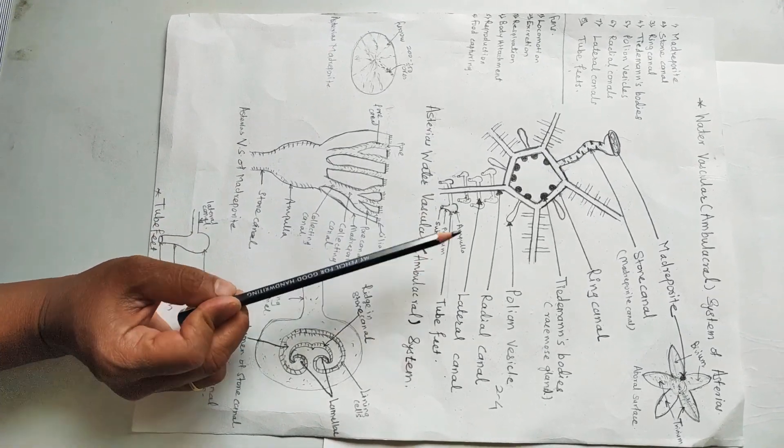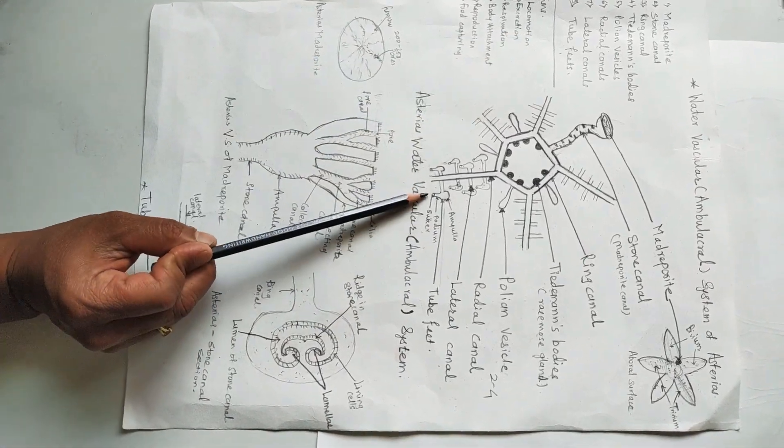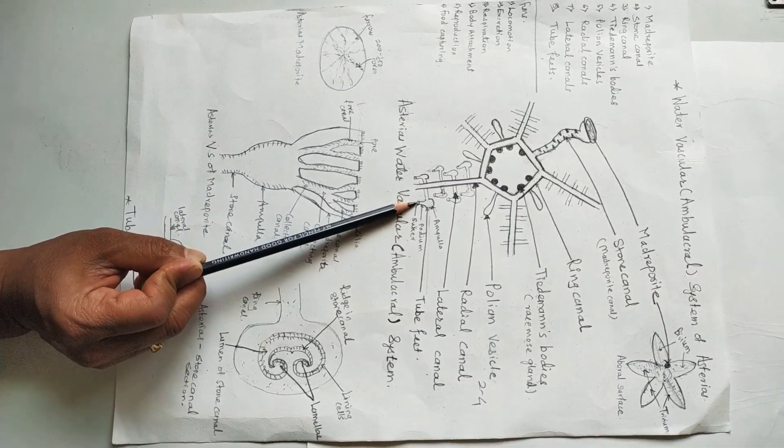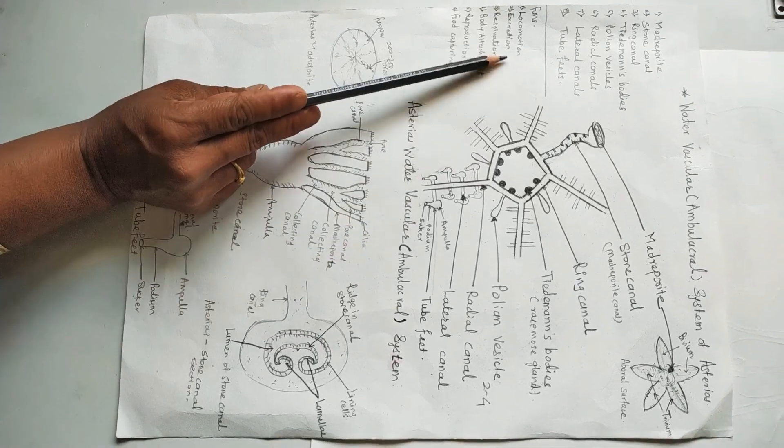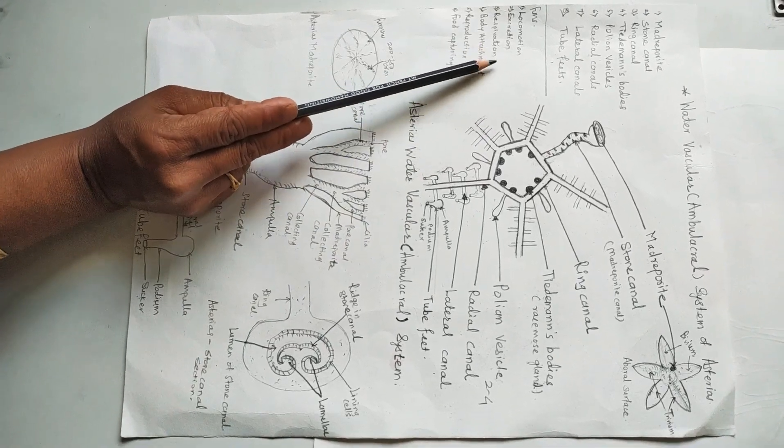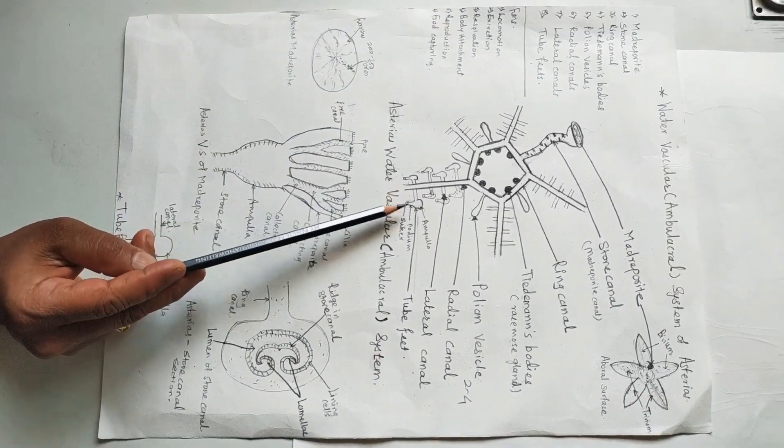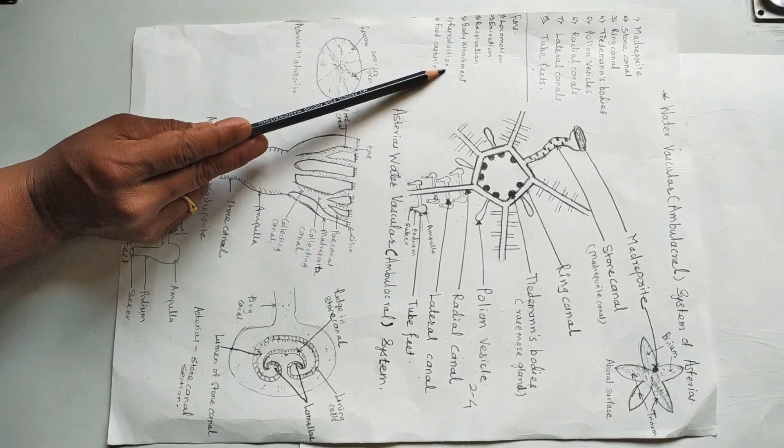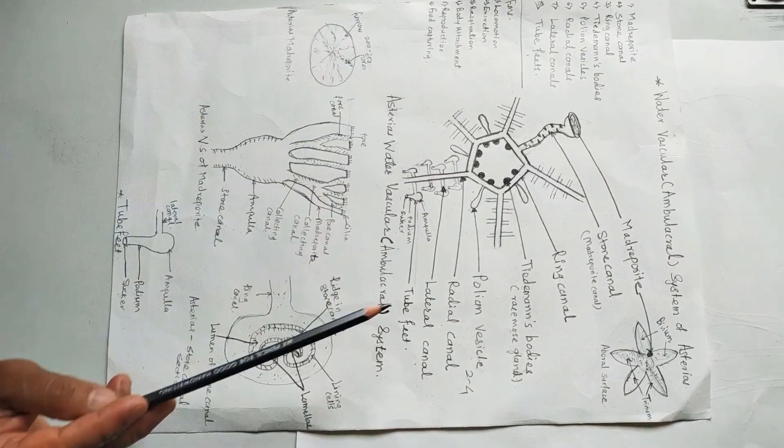Functions of water vascular system: First function is locomotion, where the terminal portion of the tube feet, that is the sucker, is helpful for attachment to the substratum. Then excretion, removal of nitrogenous waste material. Then respiration, that is gaseous exchange. Then body attachment with the help of sucker to the substratum or any object. Then food capturing. Thank you.